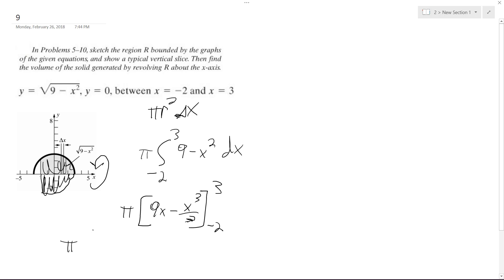What we're going to end up with here is, 3 is 27 minus 3, so 27, so that ends up being 27 divided by 3, so that's 18, minus negative 2, so negative 18. Yeah, that's right.